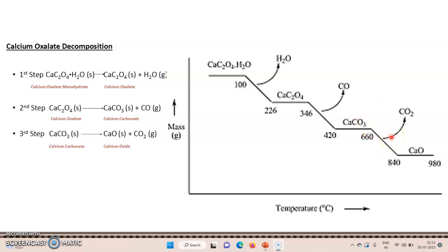After 660°C, calcium carbonate undergoes decomposition. After a number of decompositions, the product obtained is calcium oxide. When calcium oxide is heated above 950°C, there is no further change — calcium oxide is not further decomposed. Therefore, calcium oxide is the final stable product of the decomposition of calcium oxalate monohydrate.